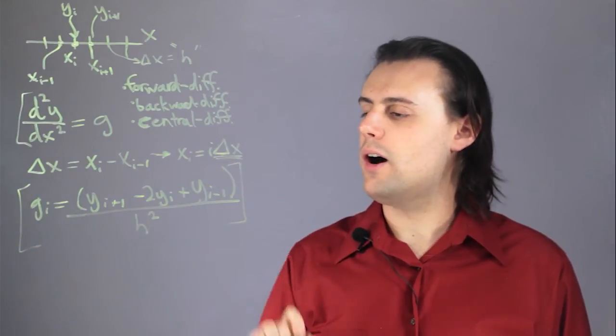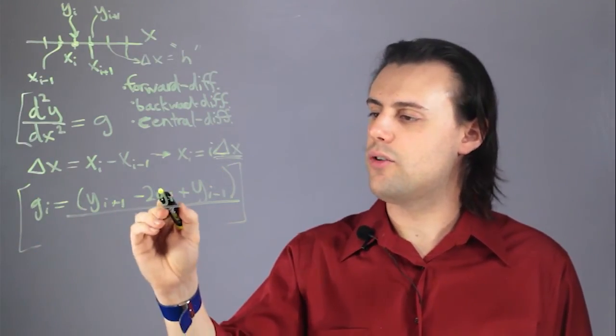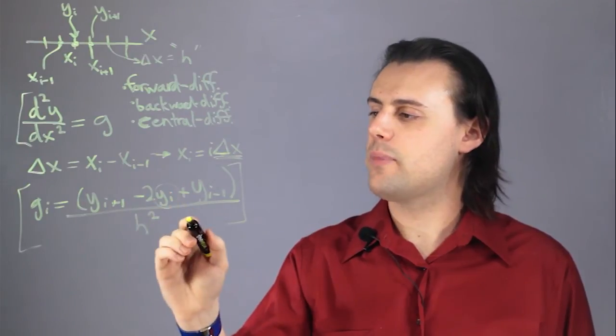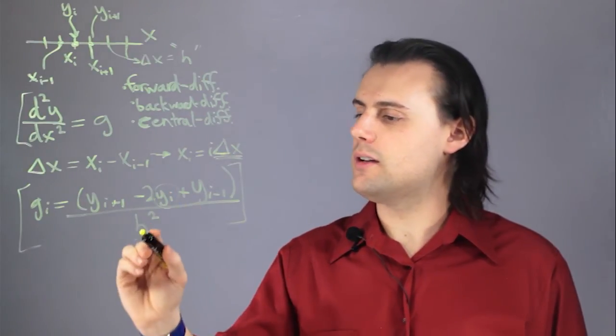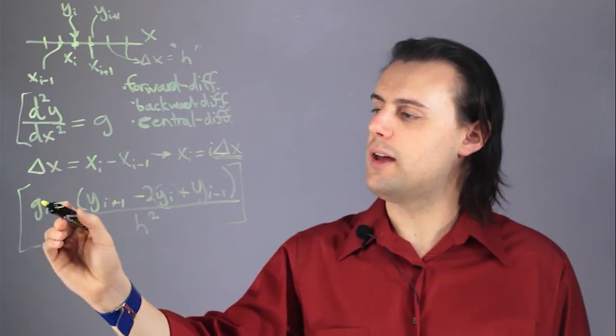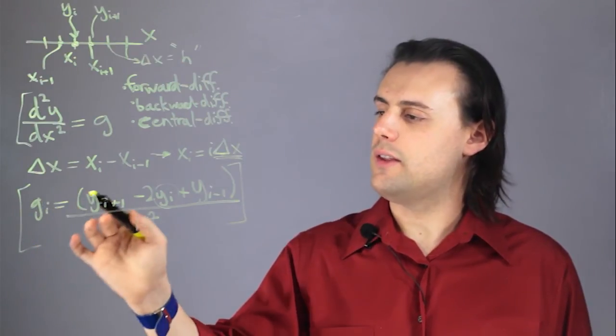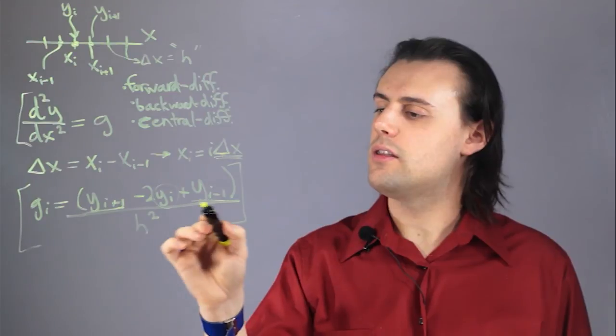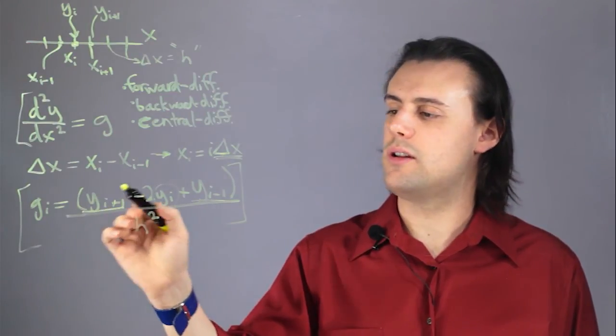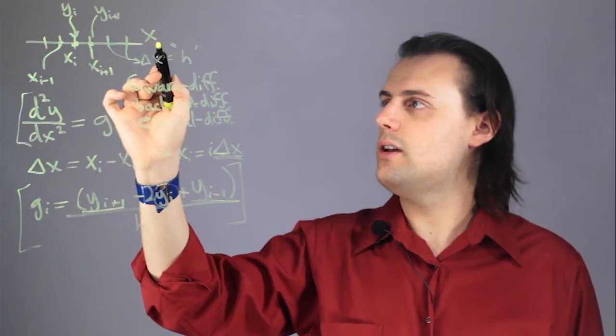So if you wanted to solve for y, you can just algebraically solve for y sub i, and that would just mean taking h squared, multiplying it with g_i, and then subtracting off these two terms, the nearest neighbor values in this discretized lattice.